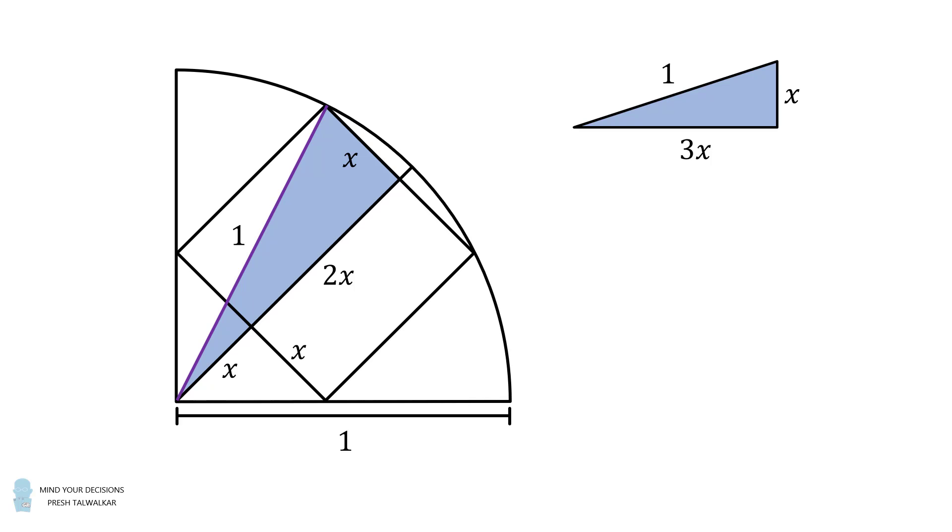Since we have a right triangle, here we go again. We must have x squared plus 3x the quantity squared is equal to 1 squared. This means x squared plus 9x squared is equal to 1, which means 10x squared is equal to 1. Consequently, we will have that x squared is equal to 1 over 10.